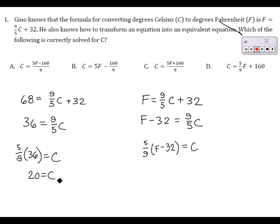It's actually easier when you don't have a number there because you don't have to do any arithmetic. Now let's look at the answers and see if this appears. It doesn't look like it appears anywhere, so maybe it's an equivalent form. Let's multiply it out — none of these are in the factored form. I get five-ninths f minus 32 times five-ninths.